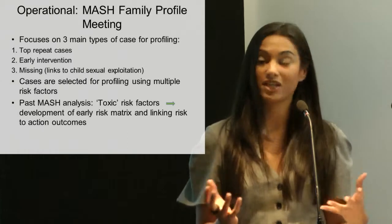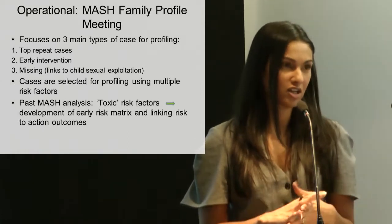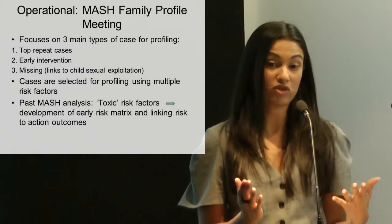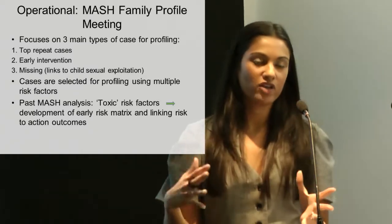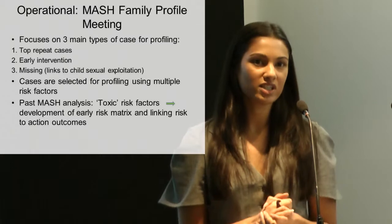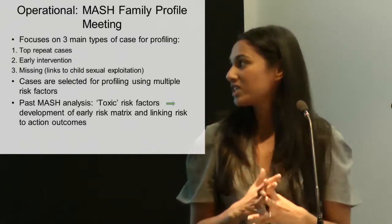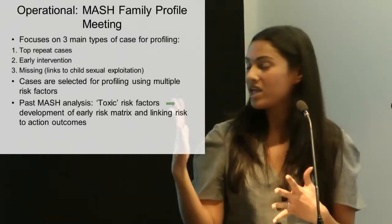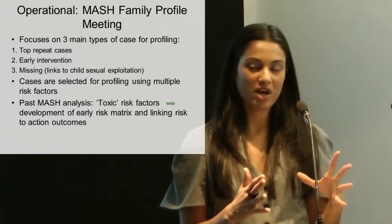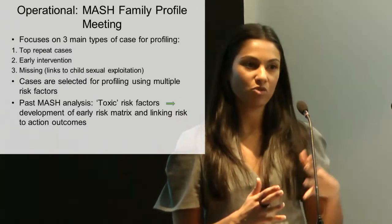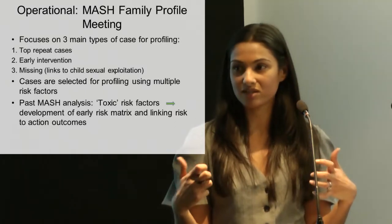And obviously there are clear links to child sexual exploitation and also things like drug running networks. In pushing that work further forward, we're looking to develop this early risk matrix — to say that yes, we know these are our main, glaringly obvious risk factors, but if we're talking about early intervention, then what are those early indicators that actually lead into those toxic risk factors?